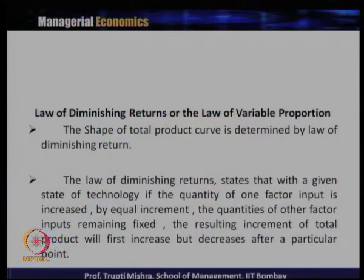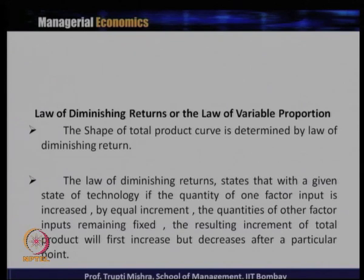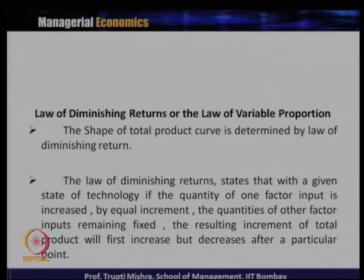The law of diminishing returns, also known as the law of variable proportion, is the logic behind the shape of the total product curve. It states that with a given state of technology, if the quantity of one factor input is increased by equal increments while the quantity of other factor inputs remains fixed, the resulting increment of total product will first increase, but decrease after a particular point.